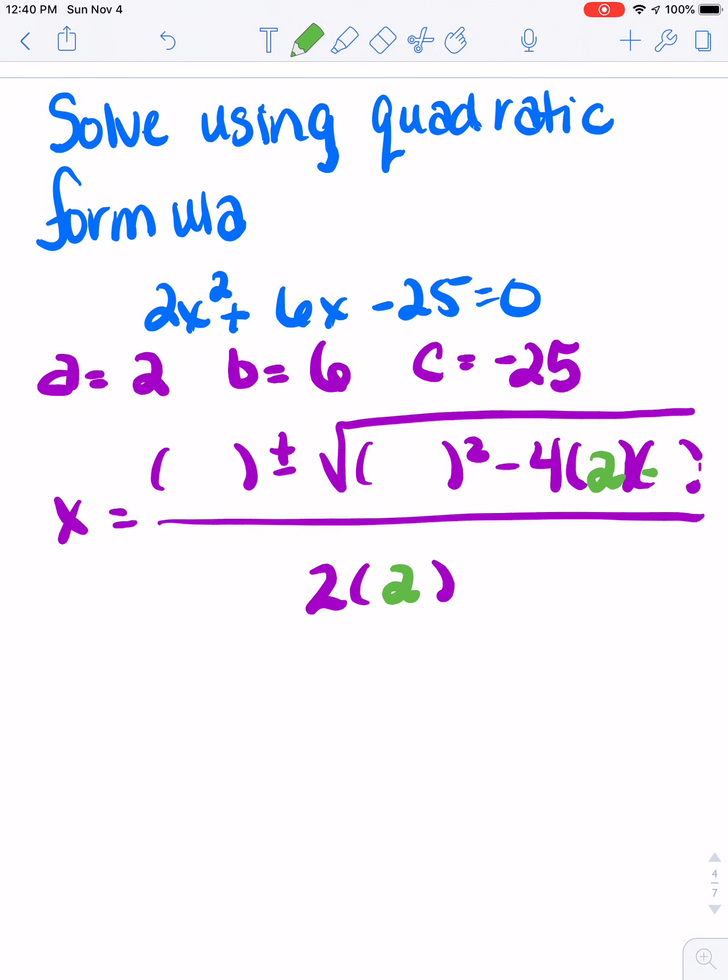c is negative 25, b is 6, but remember this one out here is going to be negative b, so opposite of that. So it's going to be -6.